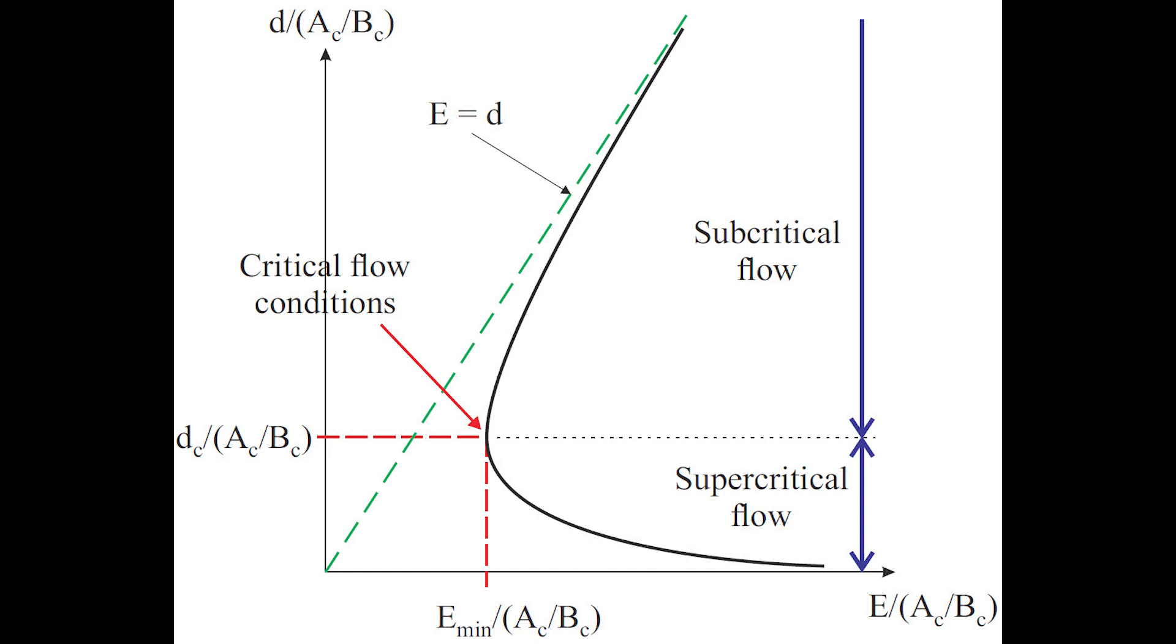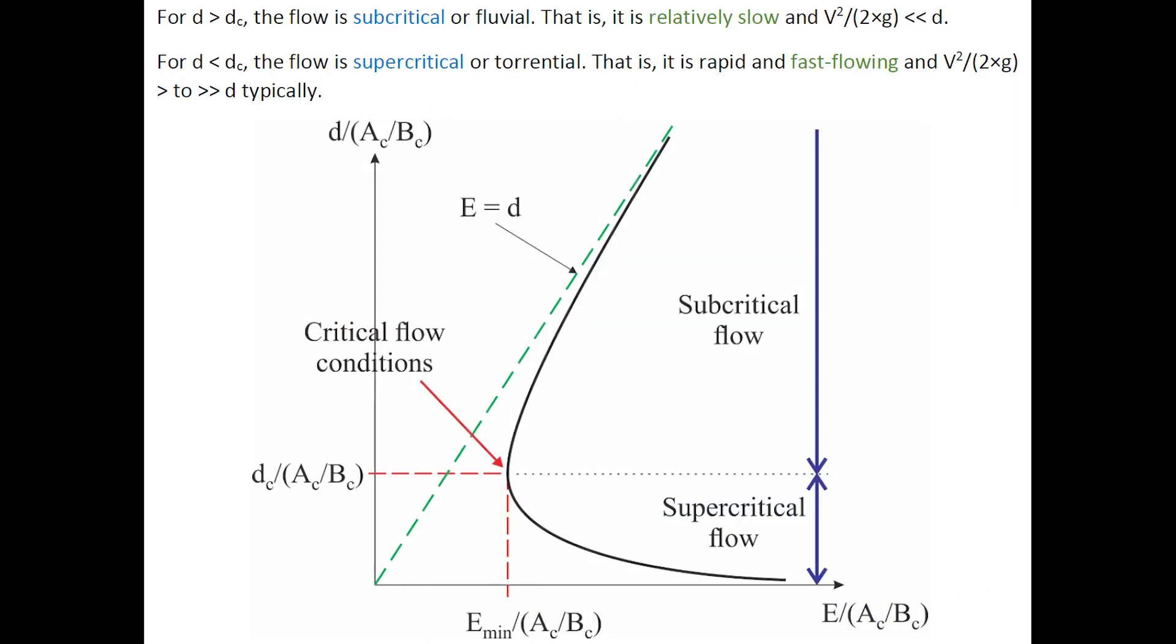When the water depth is greater than the critical depth, the flow is subcritical or fluvial—it is relatively slow and V²/(2g) < d. When the water depth is less than the critical depth, the flow is supercritical or torrential, and the kinetic energy head is important.